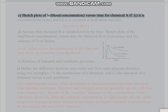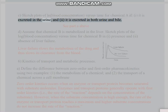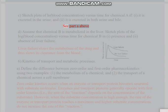Part C: Sketch plots of ln(blood concentration) versus time for chemical A if: (i) it is excreted in the urine, and (ii) it is excreted in both urine and bile. This is Part A above.